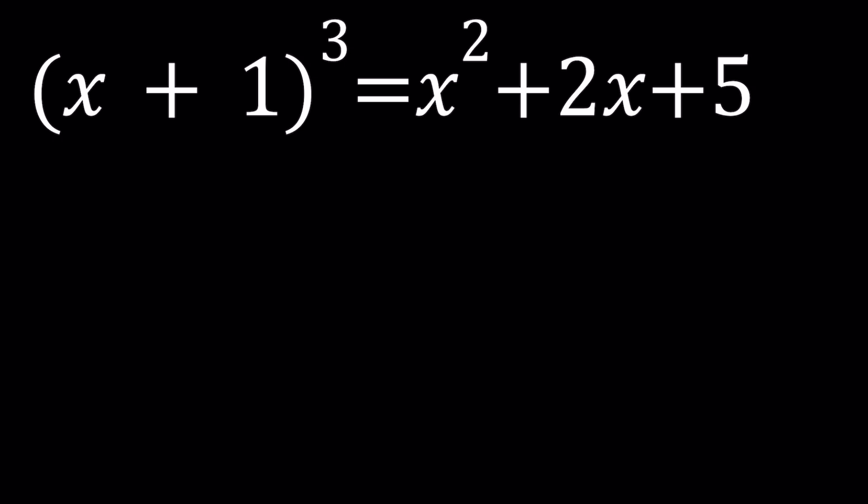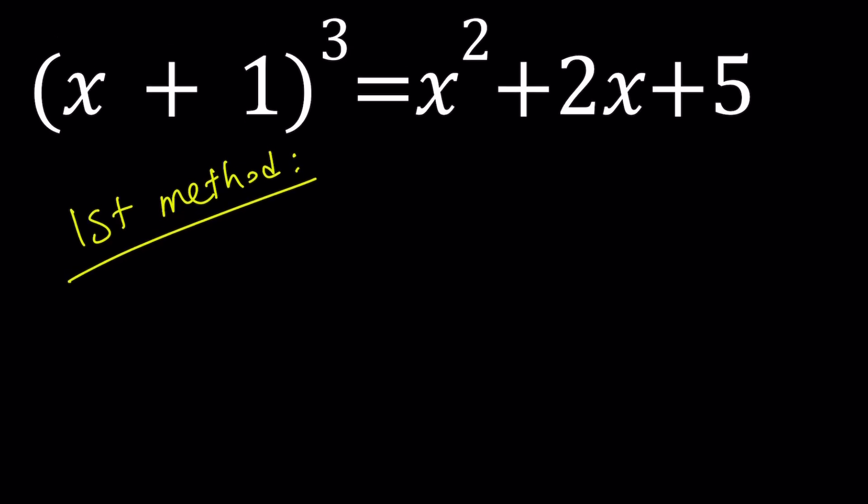We have x plus 1 to the third power equals x squared plus 2x plus 5. And we're going to be solving for x values, obviously. What else can you solve for? There's no y. And don't ask why. I'm going to present two methods, and let's start with the first one.